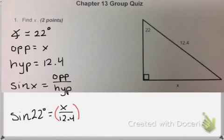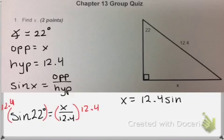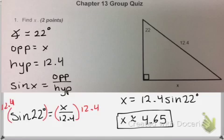To solve this, I'm going to multiply both sides by 12.4. What I have left is x equals 12.4 sine of 22. You plug this into your calculator exactly as you see it, 12.4 sine of 22, and you get about 4.65. That's the length of your leg.